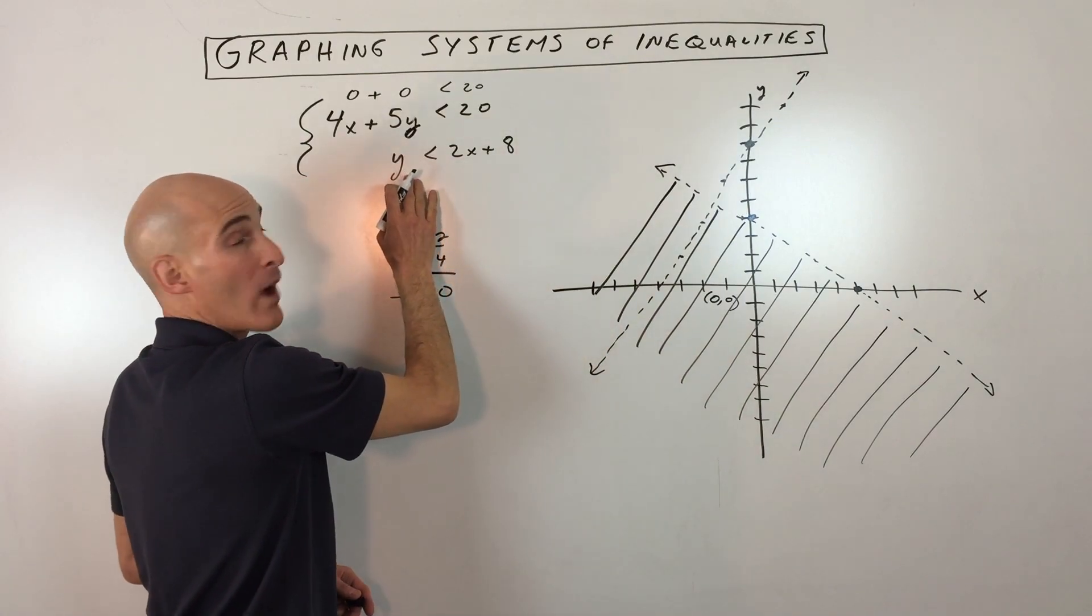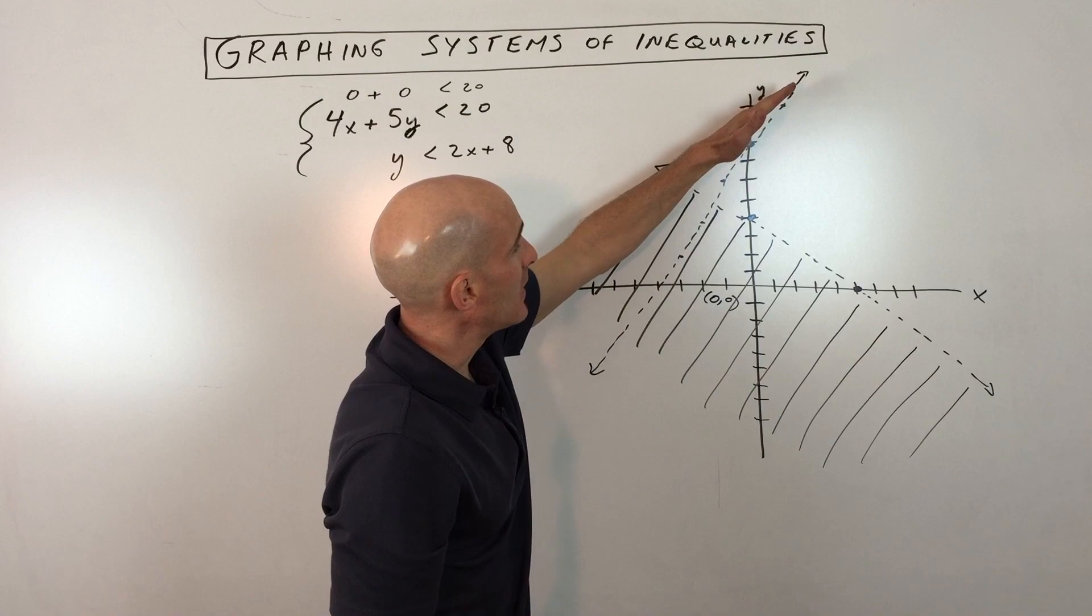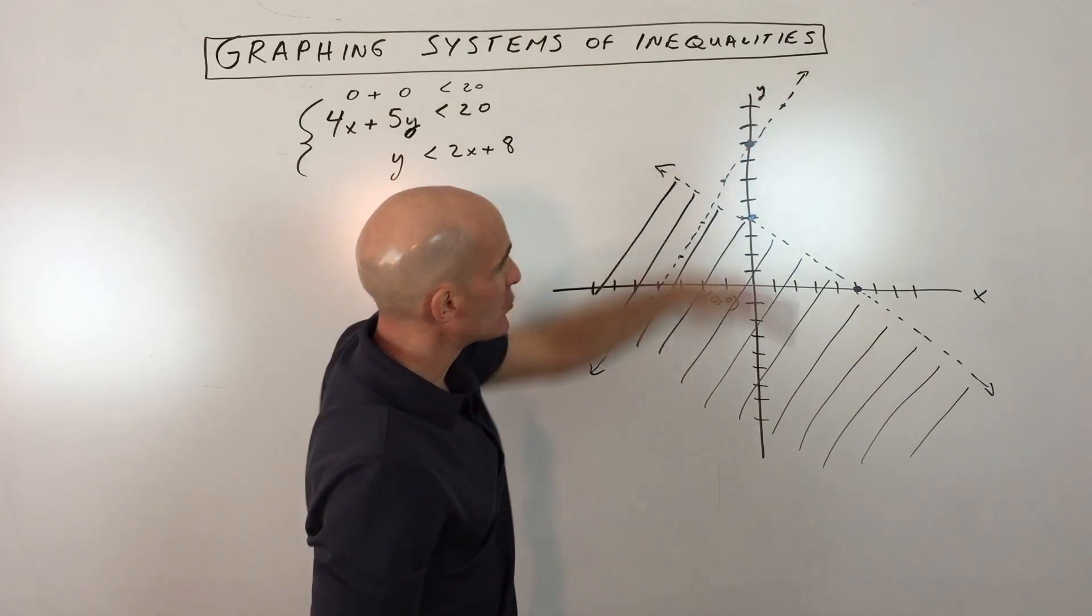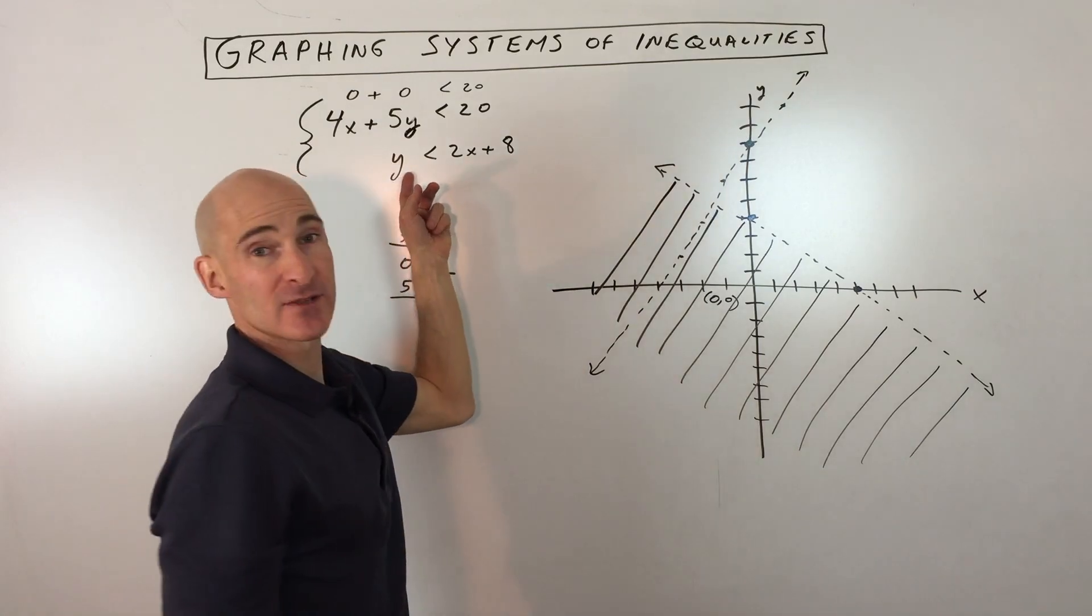Now because this is the y is by itself and it's y is less than, what you can do is you can just shade below the line. The y controls the vertical direction, up and down.